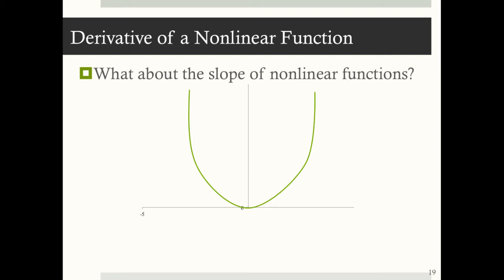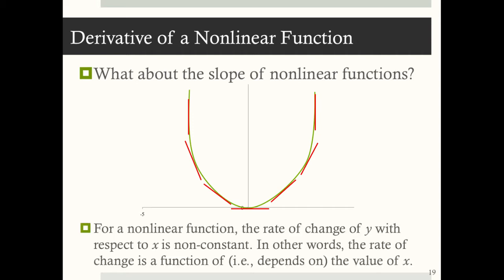Where this gets interesting is with nonlinear functions. The slope of a nonlinear function changes. Check out this parabola: at one point the slope is basically vertical; as we move along the x-axis, the slope is negative but less steep; at the origin the slope is zero; continuing along, the slope becomes positive, gets steeper, and then becomes vertical again. For a nonlinear function, the rate of change of y with respect to x is non-constant — the slope depends on the value of x.